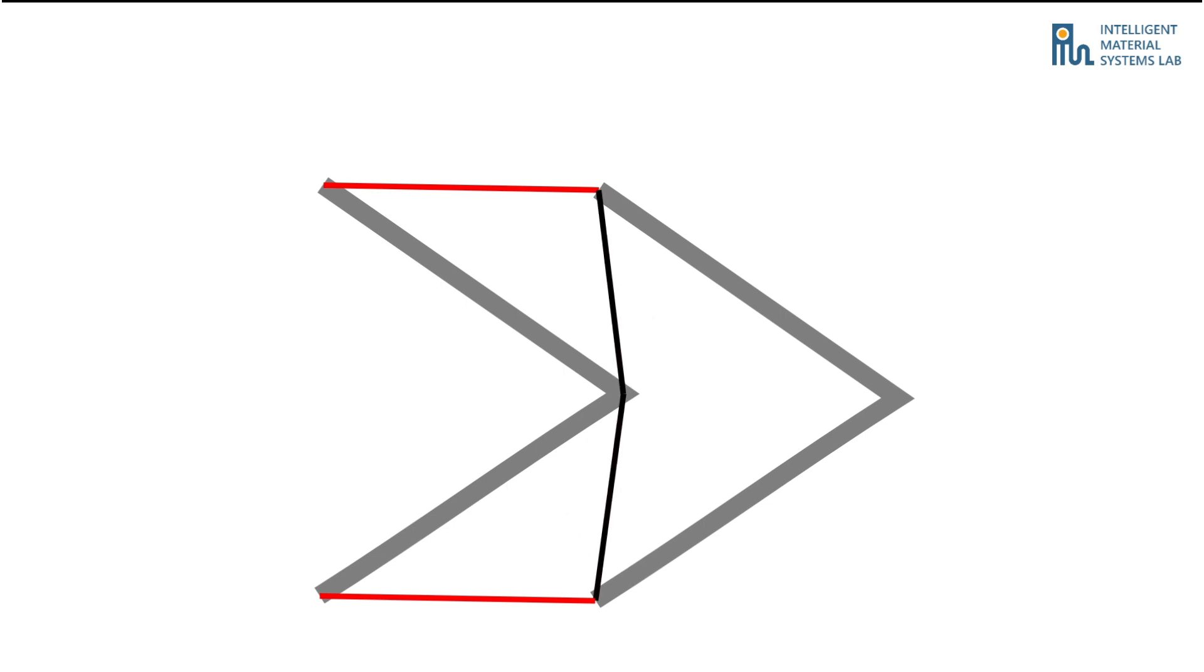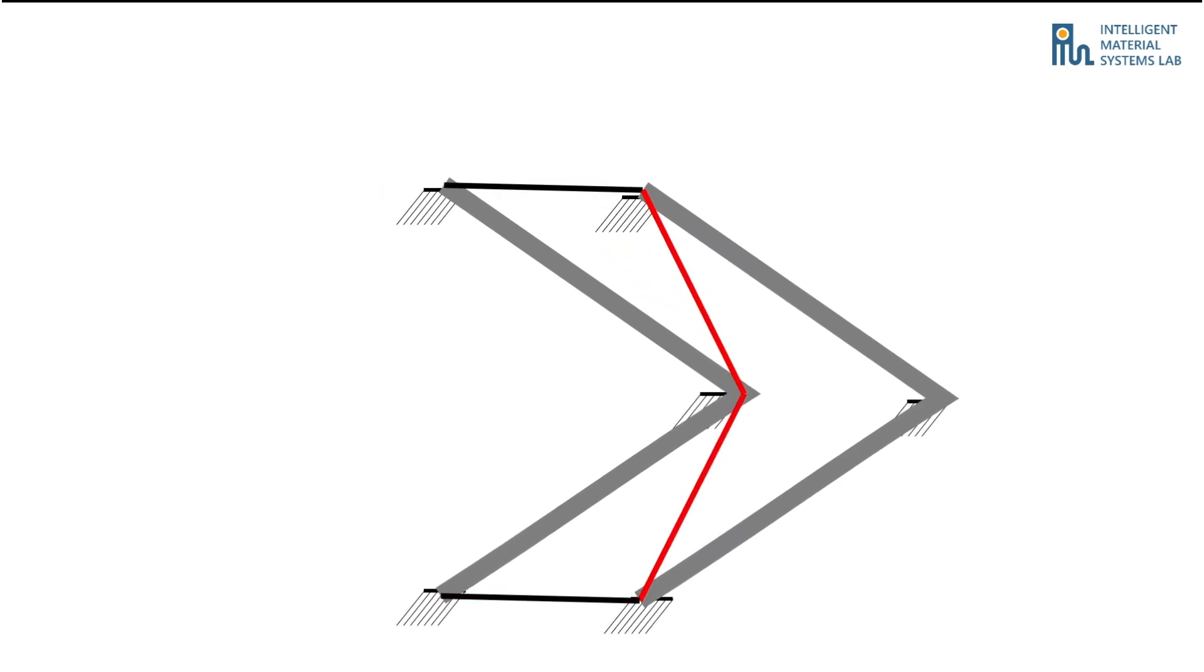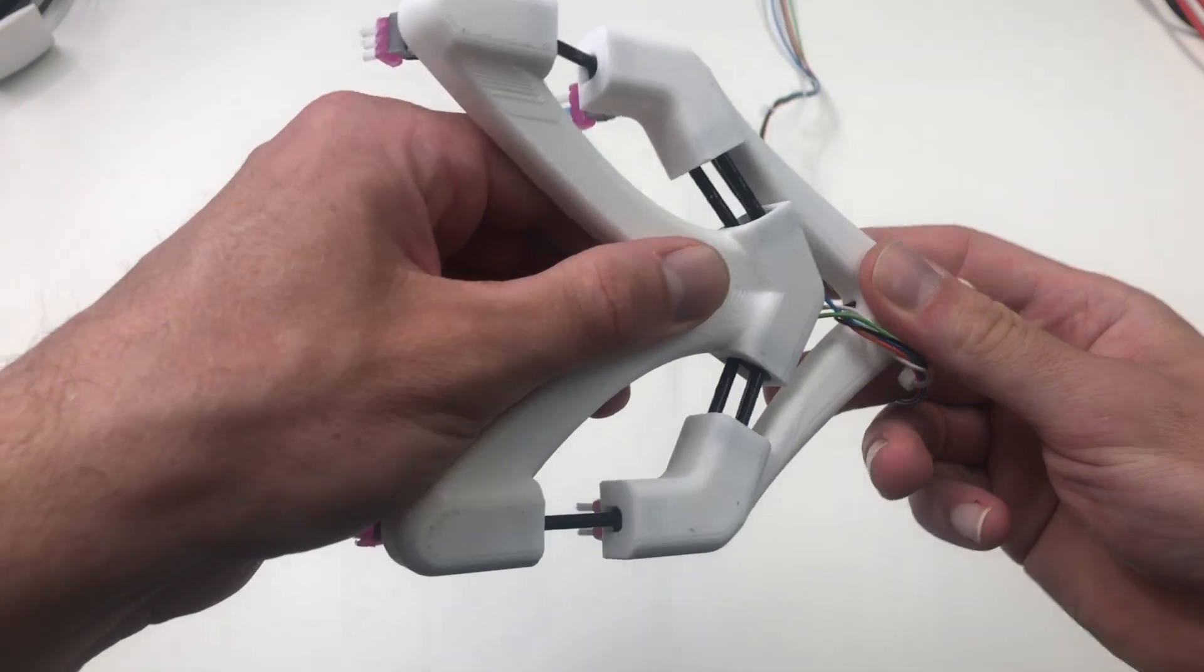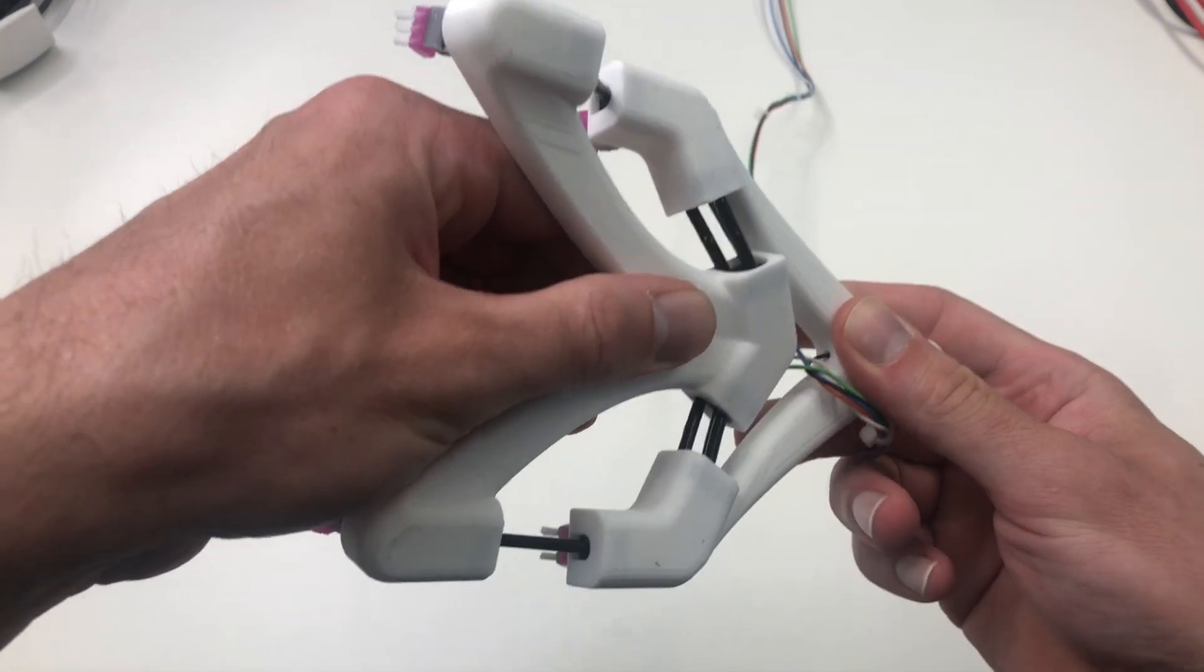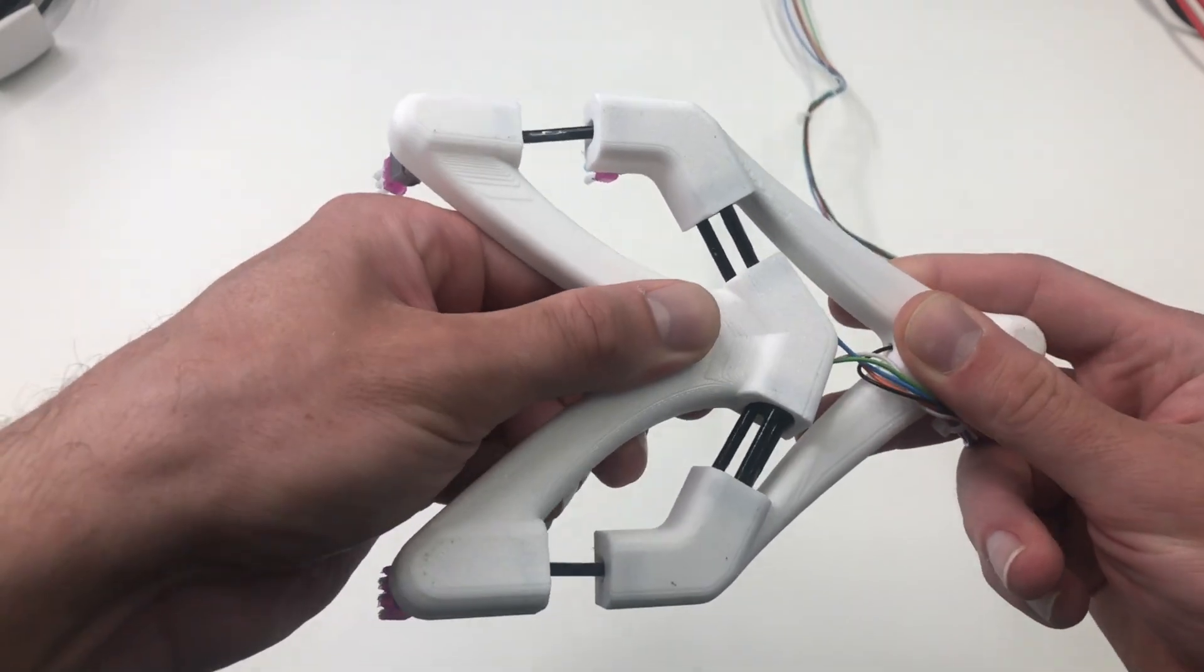This creates an oscillation, which is turned into forward motion by angled bristles with anisotropic friction. The only connection between the two segments are the RDEAs themselves. No joints, no friction, just a tensegrity structure.